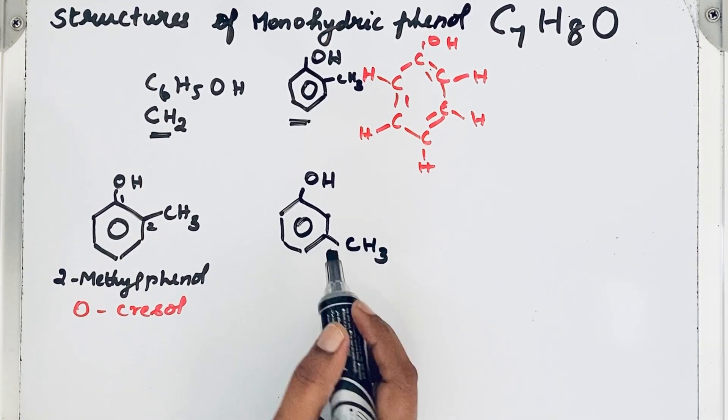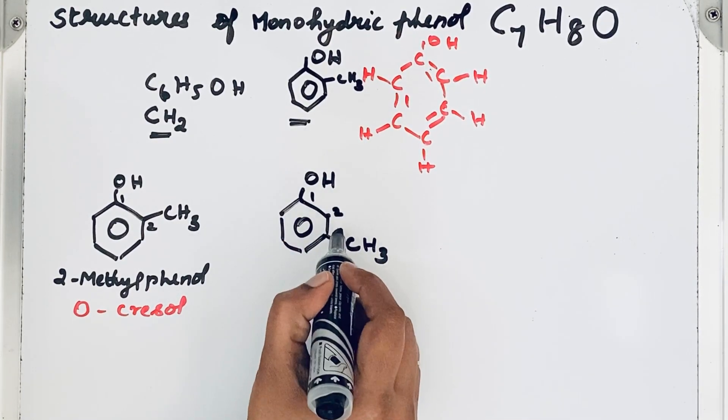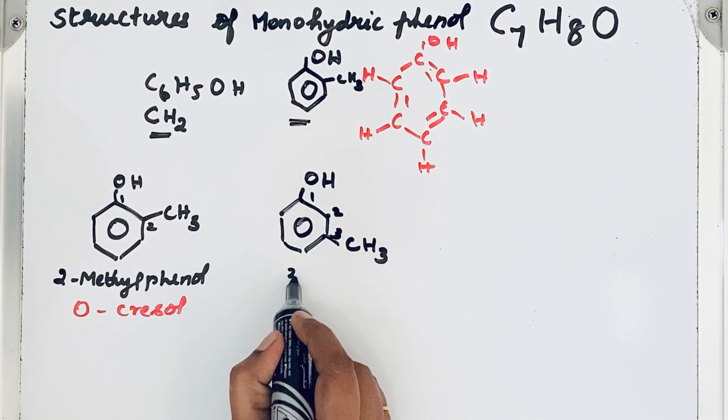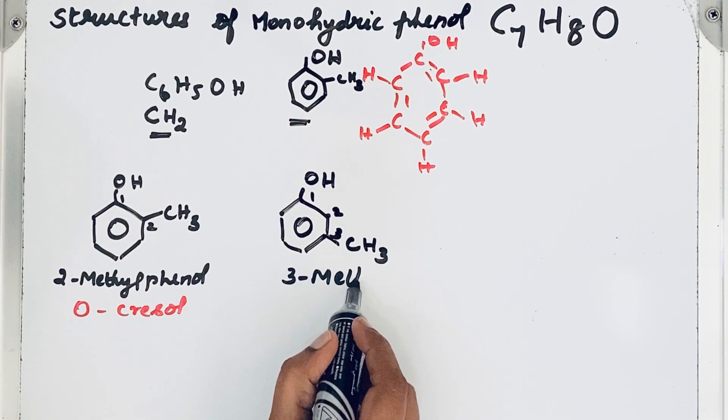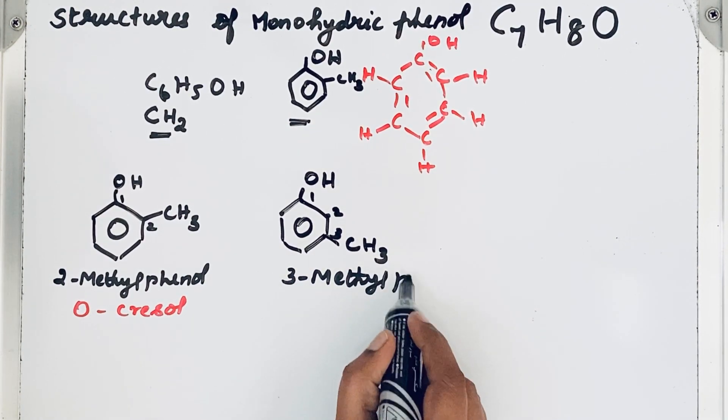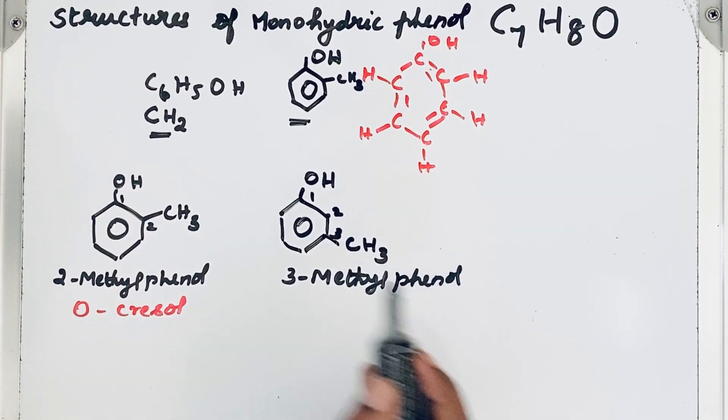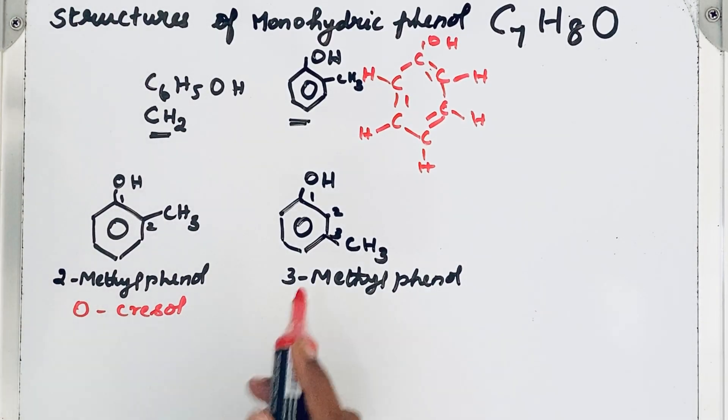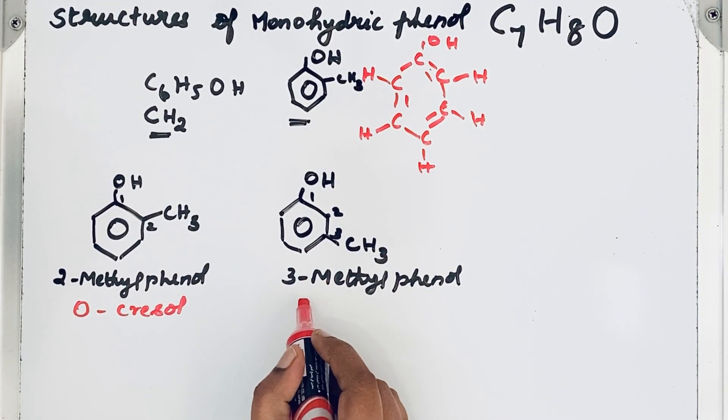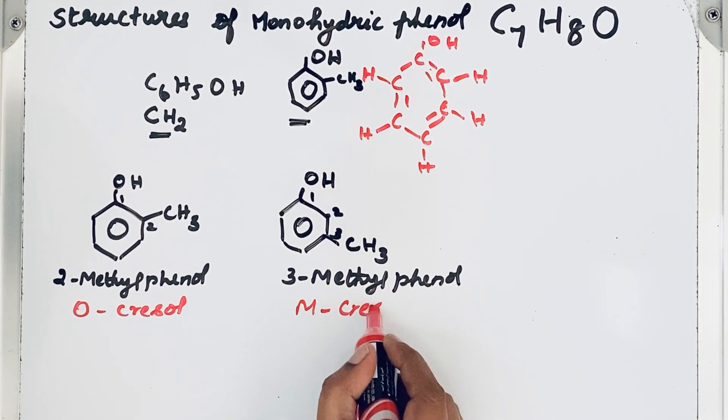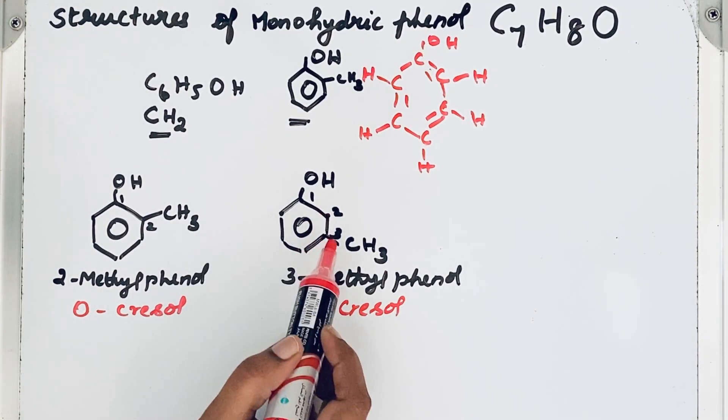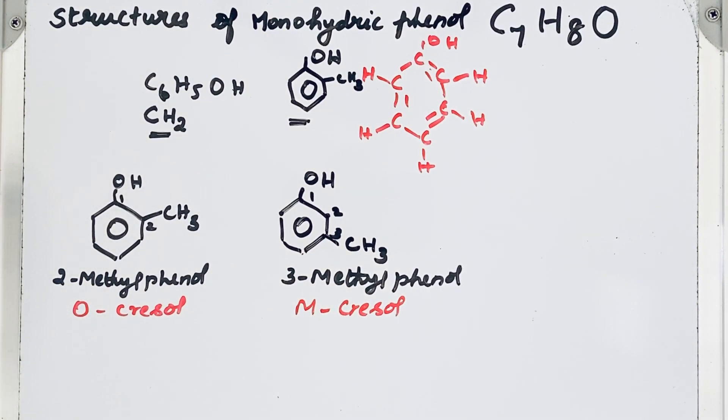Now we will try to bring that methyl group to the third position. So give numbering one, two, three. IUPAC name is 3-methylphenol. Common name meta-cresol. This is ortho, meta, and this one is para.